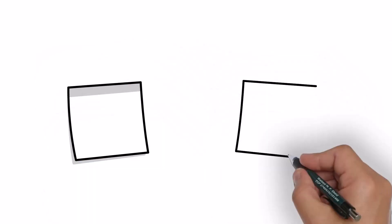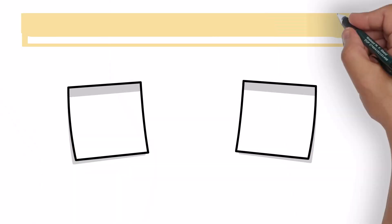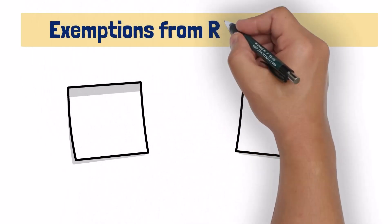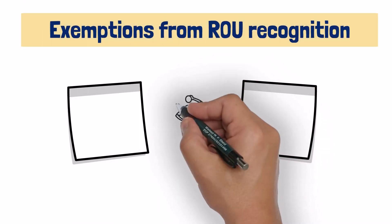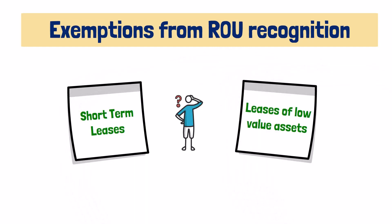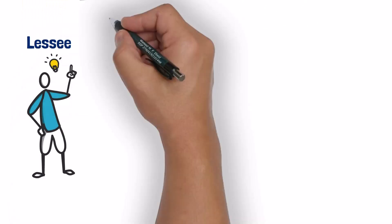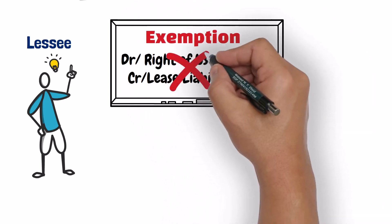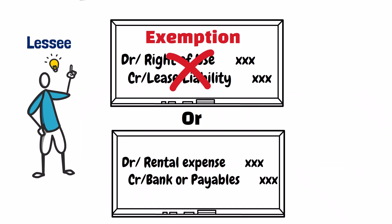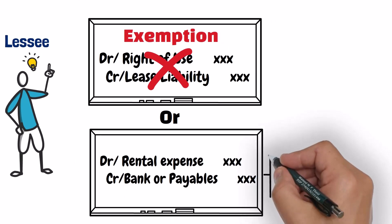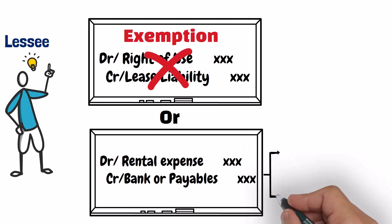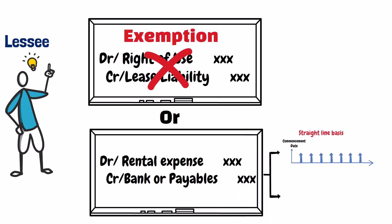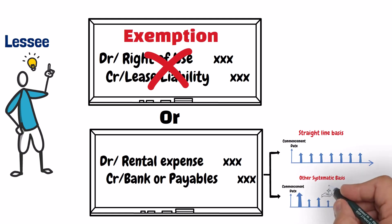To make things easier, IFRS 16 mentions certain types of lease transactions that are exempt from the requirement to recognize a right-of-use asset. These leases are short-term leases and leases of low value assets. The lessee has the option to either recognize a right-of-use asset or apply the exemption and instead recognize the lease payments directly as an expense in the profit and loss account. The lease payments are recognized on a straight-line basis over the lease term, or any other systematic basis if that basis is more representative of the pattern of the lessee's benefit.